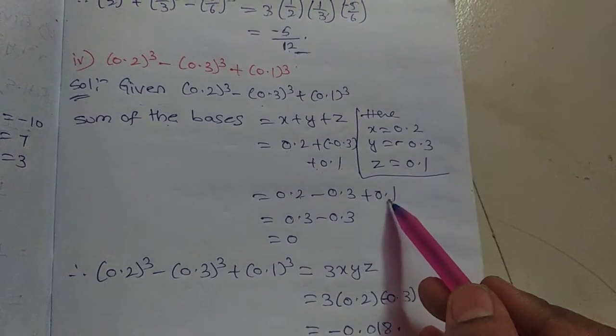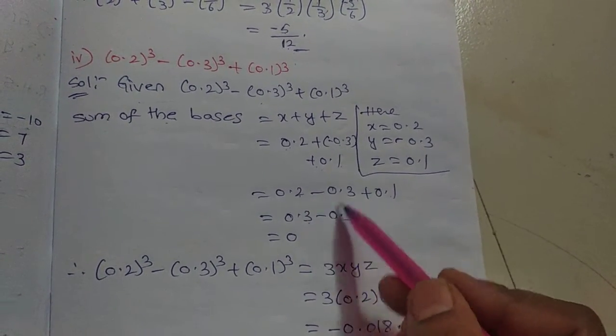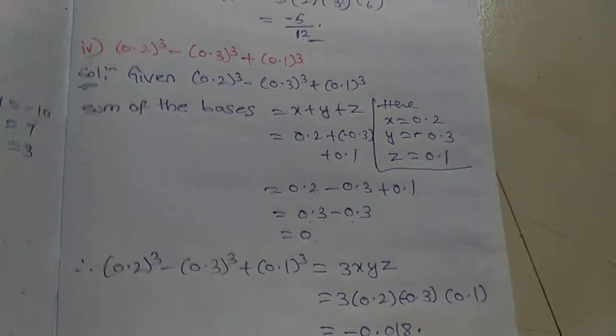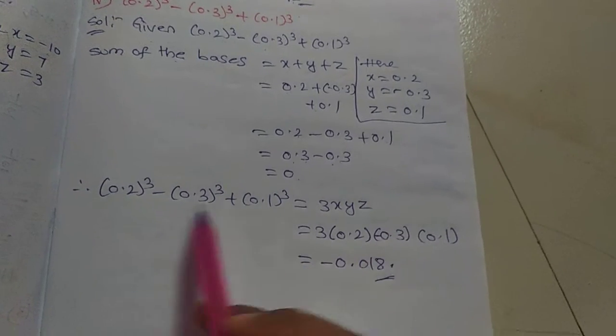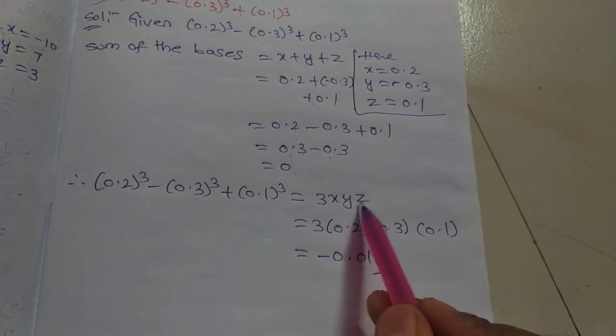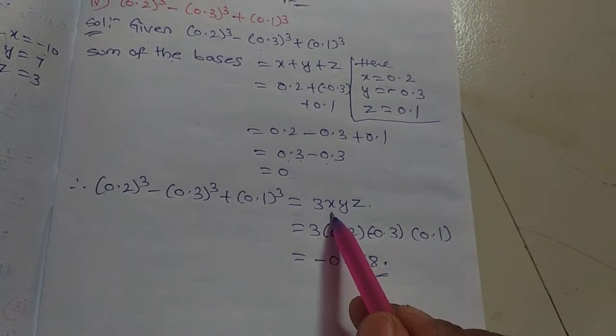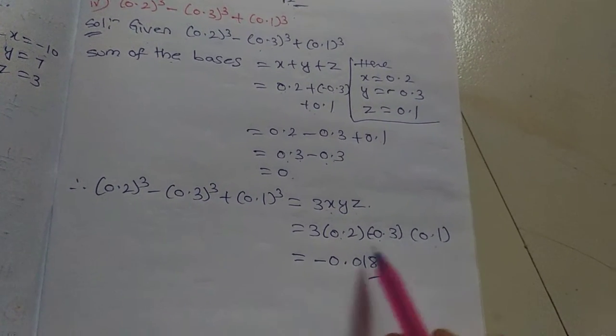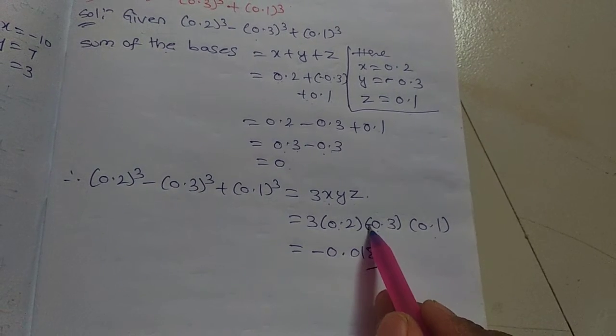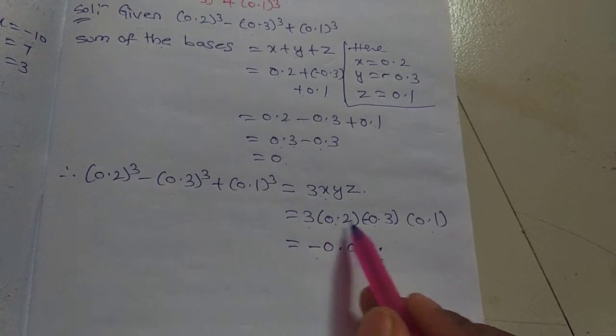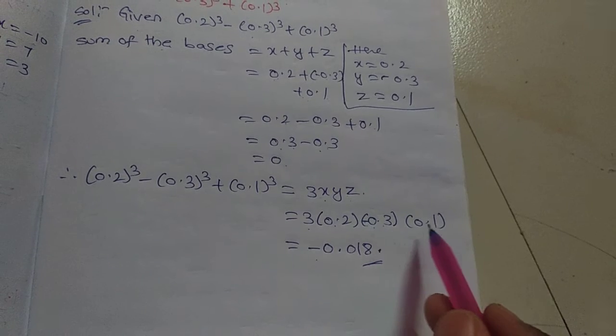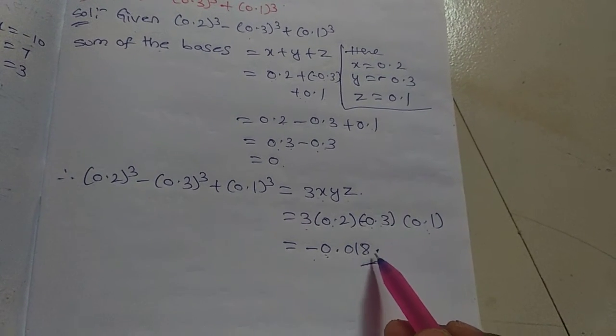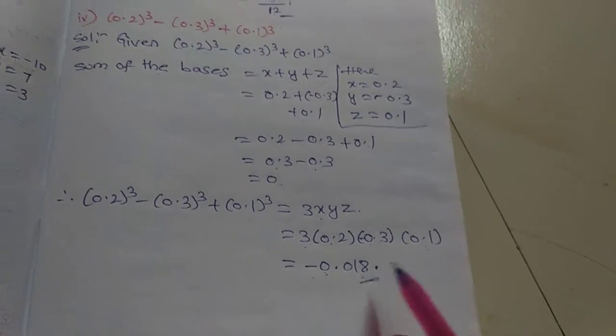0.2 + 0.1 = 0.3, minus 0.3. So 0.3 - 0.3 = 0. When the sum equals 0, we use the identity: equals 3xyz. So 3 × 0.2 × (-0.3) × 0.1. Plus times minus gives minus. Multiplying: 3 × 0.2 × 0.3 × 0.1 = 0.018. This is the answer.